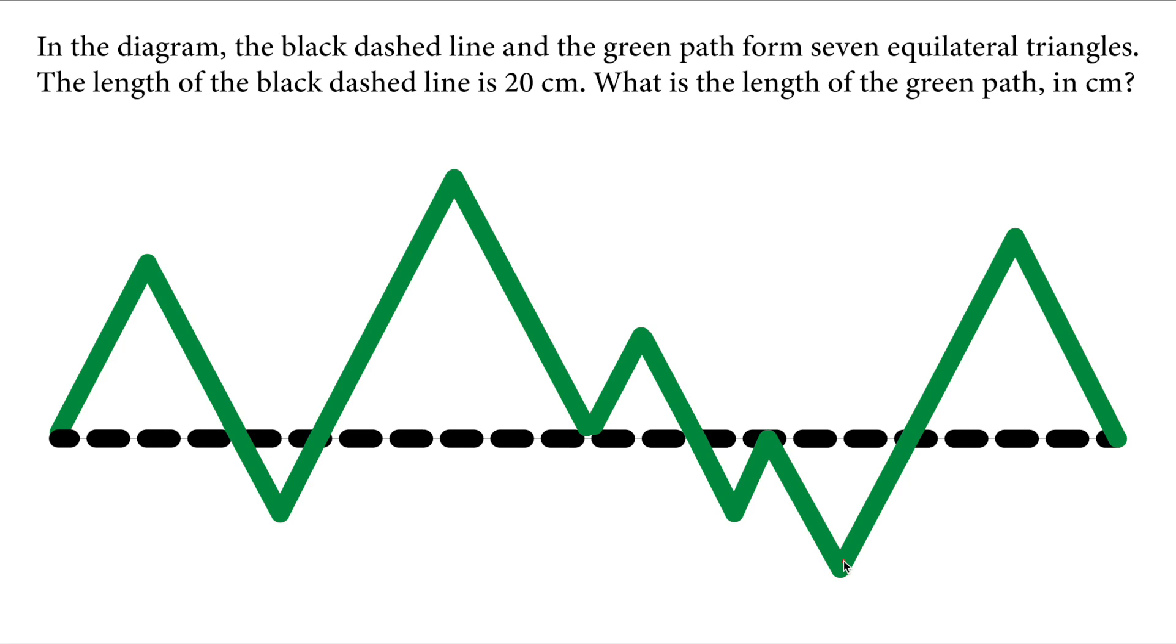In the diagram, the black dashed line and the green path form seven equilateral triangles. The length of the black dashed line is 20 centimeters. What is the length of the green path in centimeters?